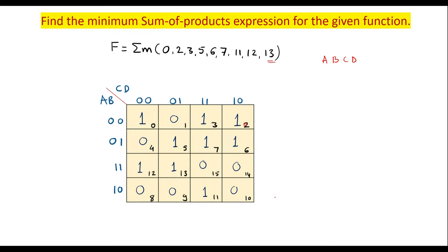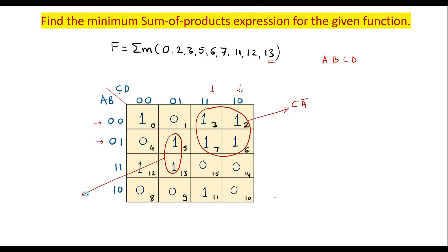Now group the 1s. Cells 2, 3, 6, 7 all have 1s — this is a quad. It belongs to two columns whose common factor is 1 (corresponding to C) and two rows whose common factor is 0 (corresponding to A-bar), giving the term A-bar C. Next, cells 5 and 13 form a pair; the common row factor is 1 corresponding to B, and the column is C-bar D, giving B C-bar D.